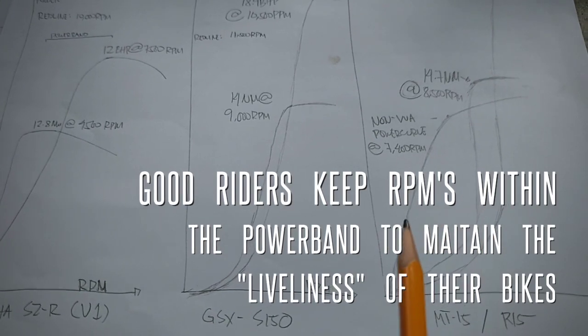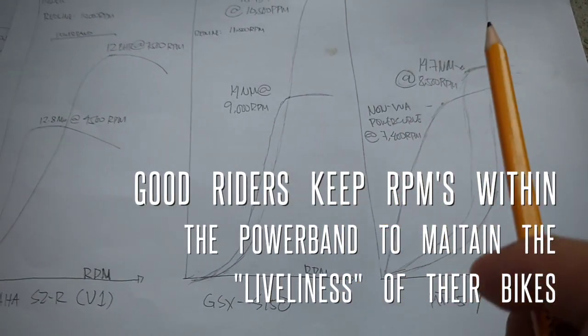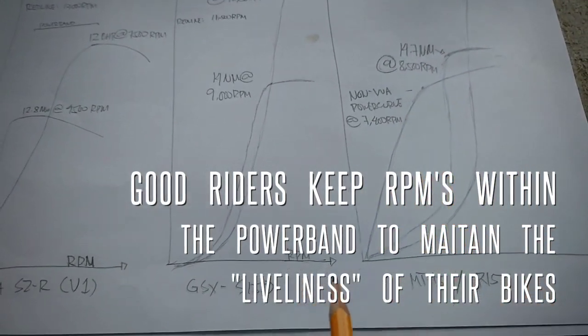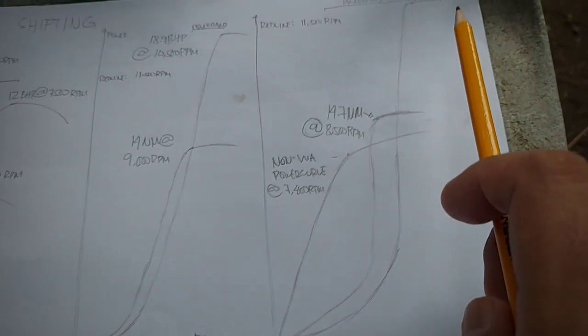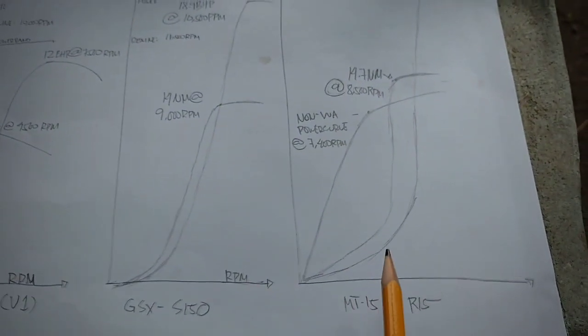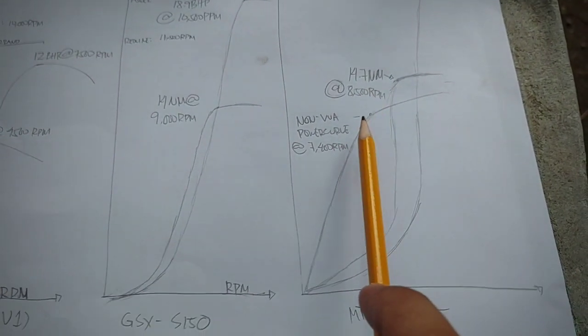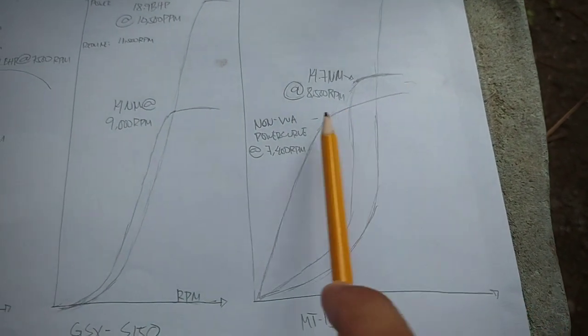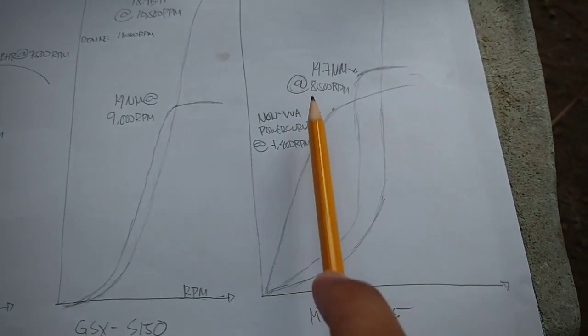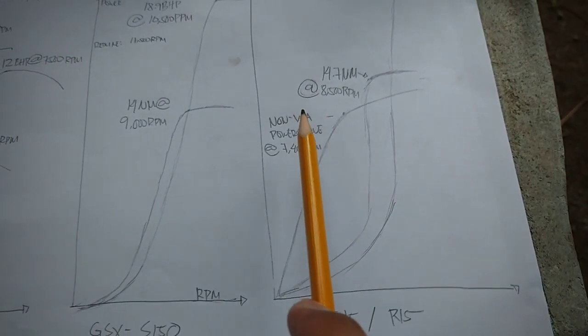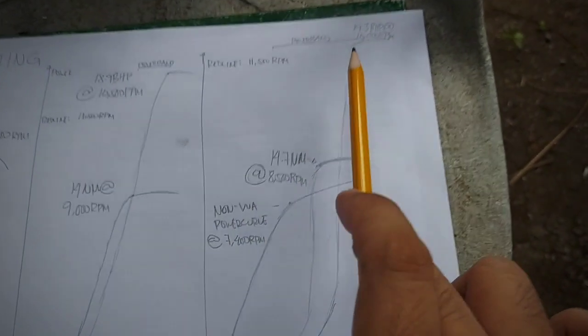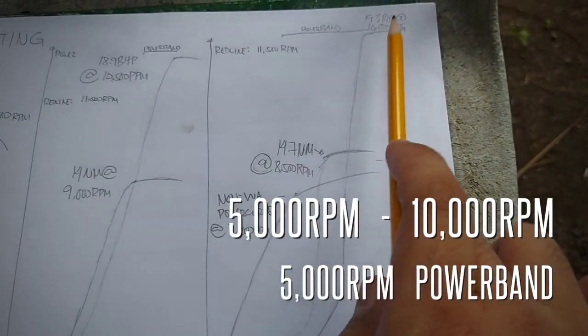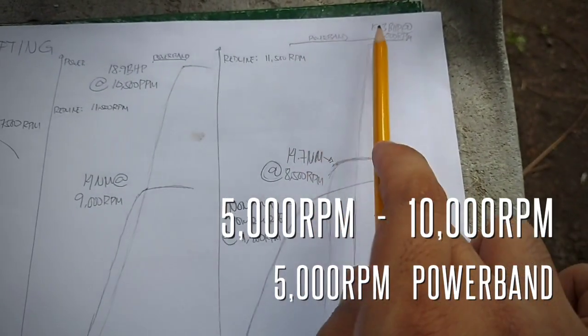Ngayon, ibang case naman yung power band ng mga VVA. Of course, meron tayong power curve nung non-VVA na cam and then meron pa tayong secondary cam profile pag gumana yung VVA. So, of course, i-consider natin yung power curve ng unang cam at yung power curve ng pangalawang cam. So below 7,400 RPM or yung maximum power ng non-VVA cam all the way to 10,000 RPM which is the maximum power of the big lobe cam. So, yun yung power band natin.